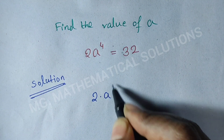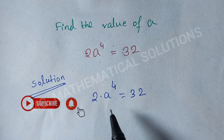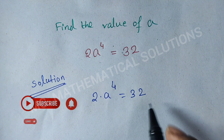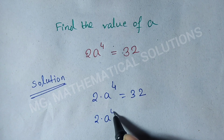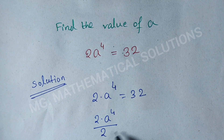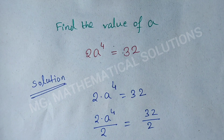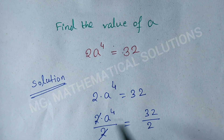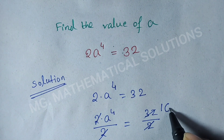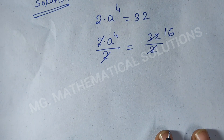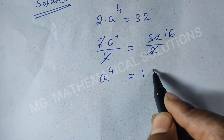2 times a to the power 4 equals 32. First we divide both sides by 2. So, 2 times a to the power 4 divided by 2 equals 32 divided by 2. The 2's cancel, and 32 divided by 2 is 16. So, a to the power 4 equals 16.